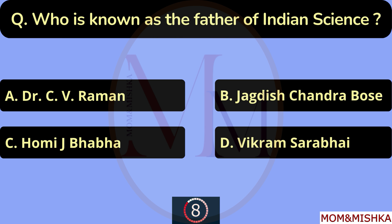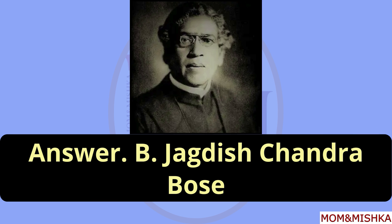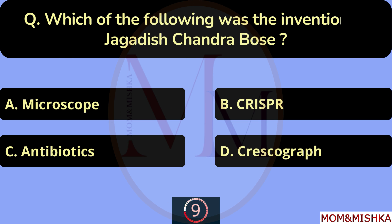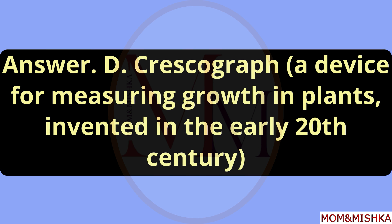Who is known as the father of Indian Science? Jagdish Chandra Bose. Option B. Which of the following was the invention of Jagdish Chandra Bose? Crescograph. Option D. It's a device for measuring growth in plants and it was invented in the early 20th century.